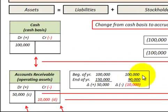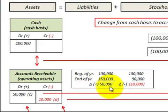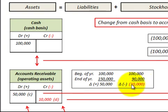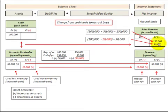Now let's look at the case where accounts receivable decreased from the beginning to the end of the year — a reduction of $10,000. We're converting sales revenue from cash to accrual basis using the same method. Our cash basis shows $100,000 received, and the reduction in accounts receivable is recorded as a credit to accounts receivable for $10,000.